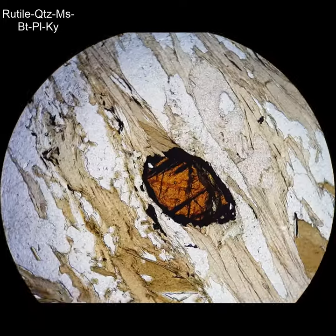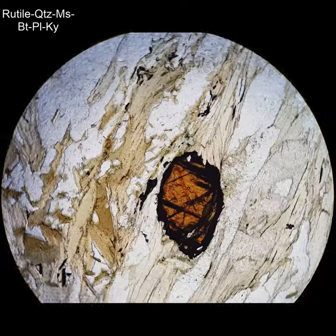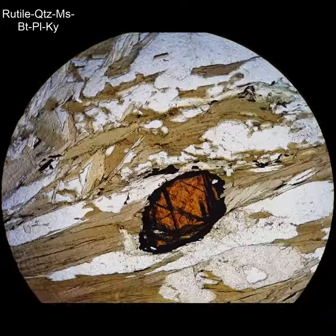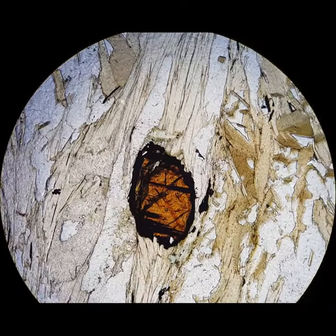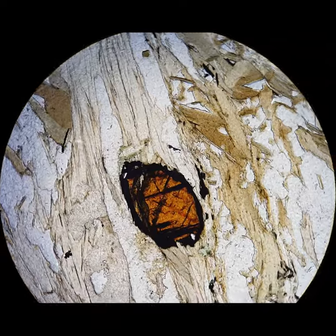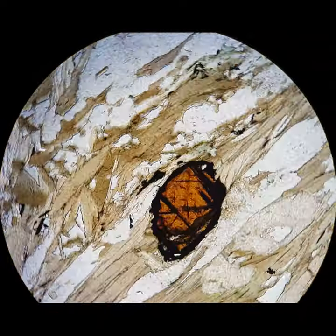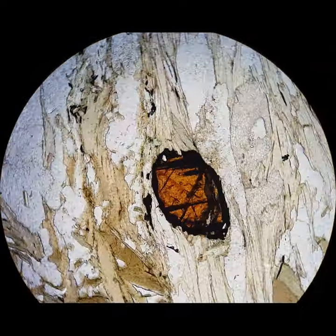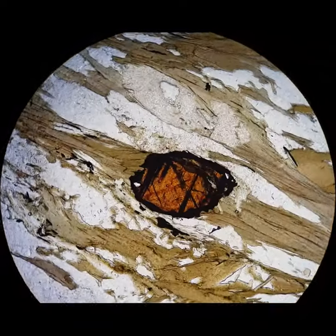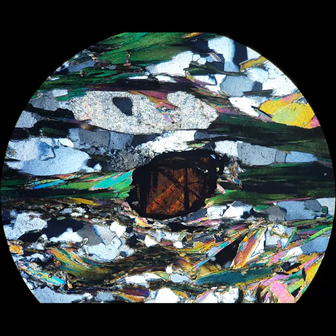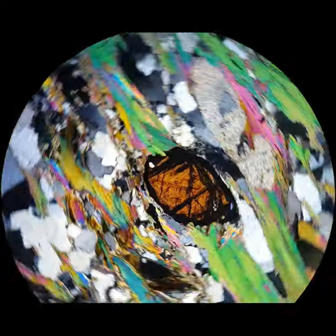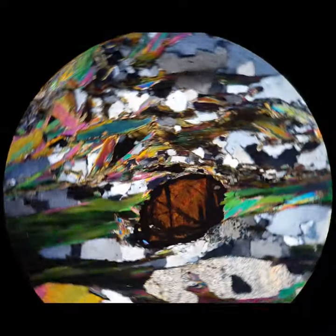This is another pretty common rutile texture. There's a large crystal of rutile — the amber crystal — that has reacted during cooling to form ilmenite. So all of the black around the outside, and those black bands that are following cleavage planes or twin planes or something like that, are ilmenite.